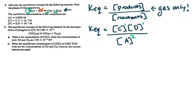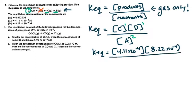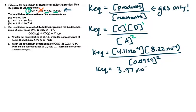That is our general equilibrium expression for the reaction shown in number 3. Now we're going to use the data. It says calculate the equilibrium constant for the following reaction, and then it gives us the equilibrium concentrations. So we do K_eq equals the concentration of C — that's 4.11×10⁻⁴ — times the concentration of D — 8.22×10⁻⁴ — over the concentration of A, which is 0.0922, and we're going to square that one. I get 3.97×10⁻⁵.